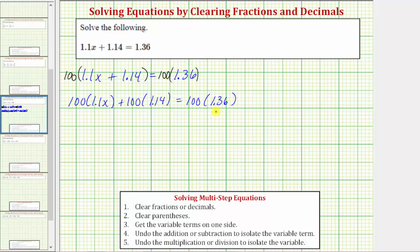The shortcut for multiplying by 100 is to move the decimal point to the right two places. Therefore, 100 times 1.1x equals 110x, plus 100 times 1.14 equals 114, equals 100 times 1.36 which equals 136.